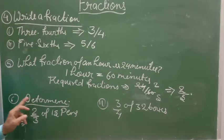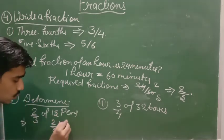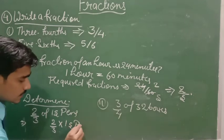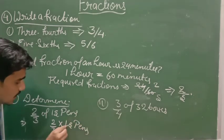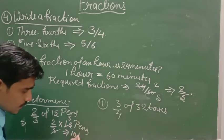And question number 6 - 2 by 3 of 15. You will write here 2 by 3 into 15. 3 into 5 is 15, so 2 into 5 is 10.